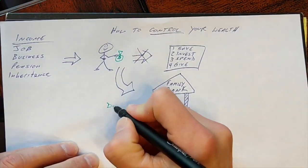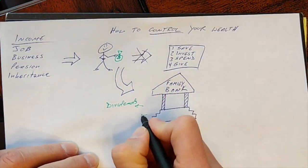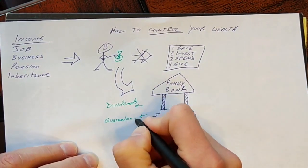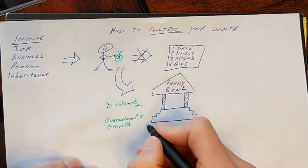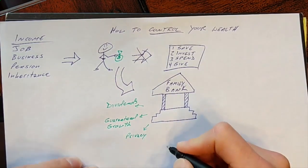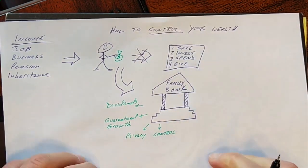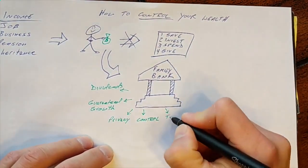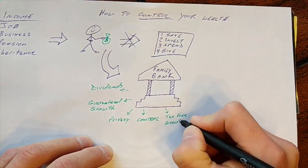Now, when your money is inside your family bank, you earn dividends. You earn guaranteed growth for life. It's private. You control it. You earn tax-free growth.